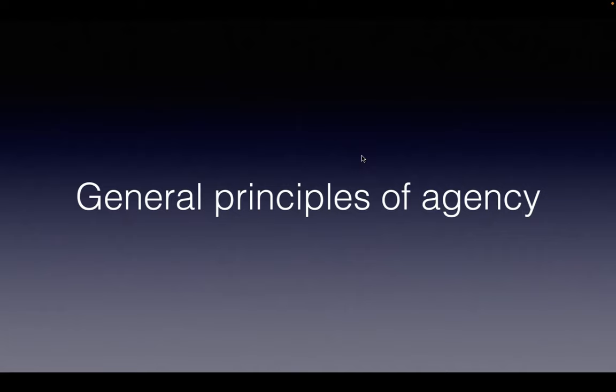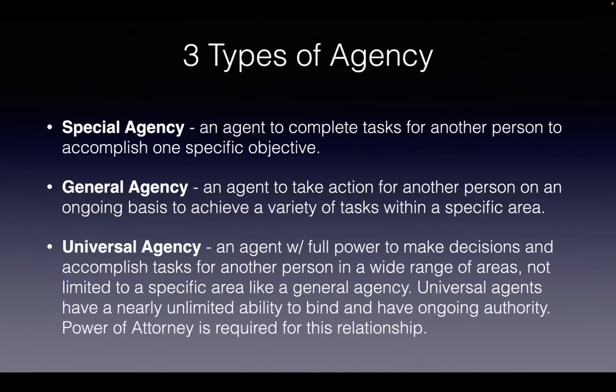Now switching to general principles of agency. We have three different types of agency. A special agent is an agent doing one specific task — like being a buyer's agent helping someone buy a home, or a seller's agent helping someone sell. That's their job: special agent.